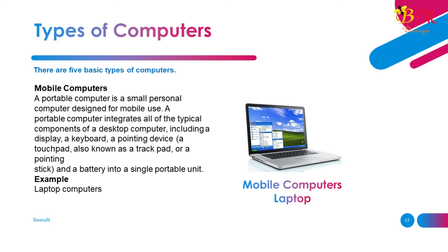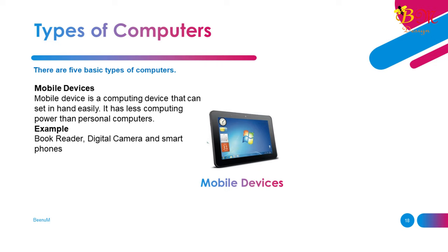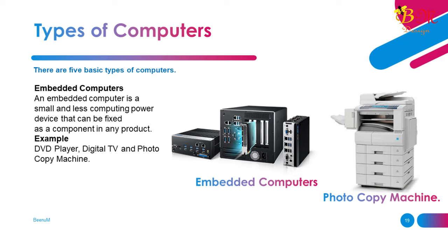Mobile Devices: A mobile device is a computing device that can fit in the hand easily. It has less computing power than personal computers. Examples: book readers, digital cameras, and smartphones. Embedded Computers: An embedded computer is a small, lower-computing-power device that can be fixed as a component in any product. Examples: DVD players, digital TVs, and photocopy machines.